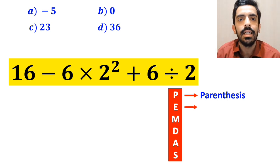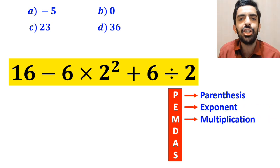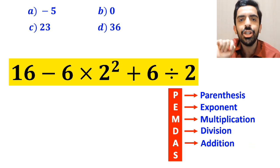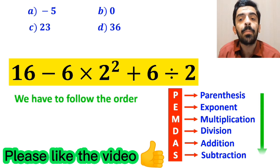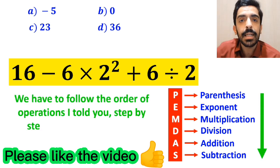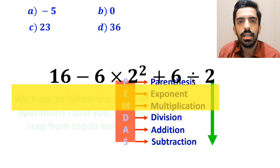In this rule, P stands for parentheses, E stands for exponent, M stands for multiplication, D stands for division, A stands for addition, and S stands for subtraction. We have to follow the order of operations I told you, step by step from top to bottom.